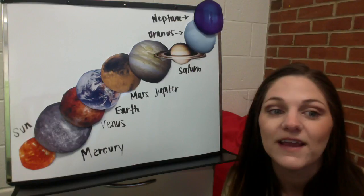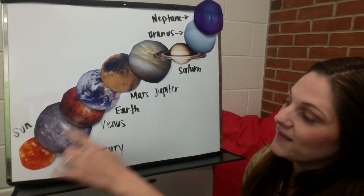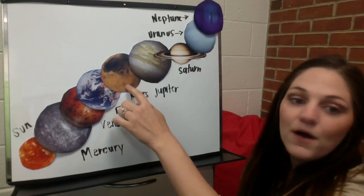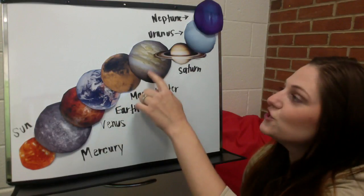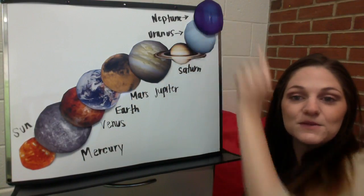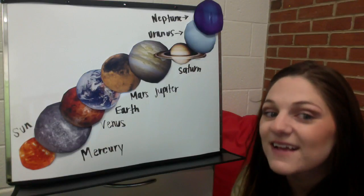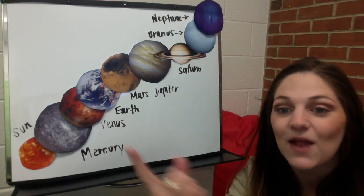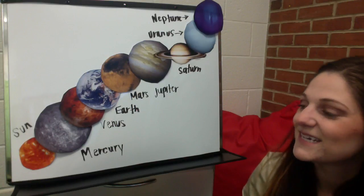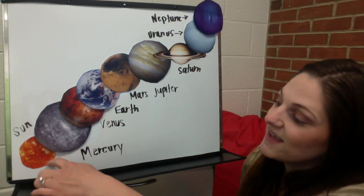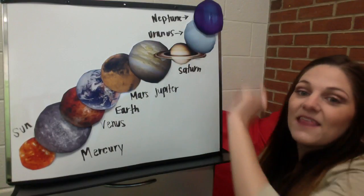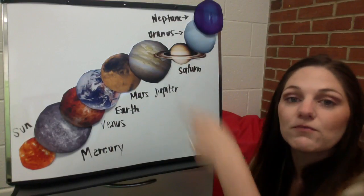First Mercury, then Venus, Earth and Mars, then Jupiter, Saturn, Uranus, next Neptune. Our Sun has eight planets that orbit around.